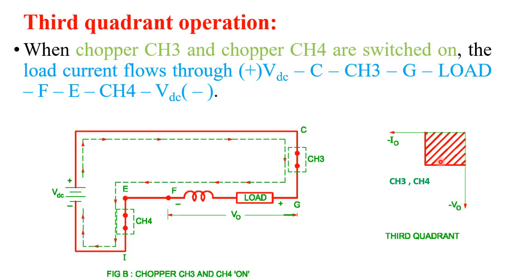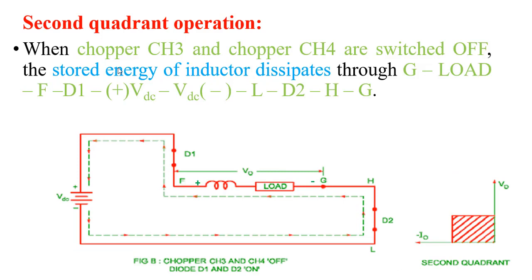Second quadrant operation: when CH3 and CH4 are switched off and diodes D1 and D2 are conducting, the inductor releases its energy and its polarity reverses — this terminal becomes positive and this becomes negative. Current flows through node G, through the load, inductor, D1, VDC, and through diode D2, back to node G. The direction of current is opposite to the reference direction, so current is negative, but output voltage is positive — the device works in the 2nd quadrant.